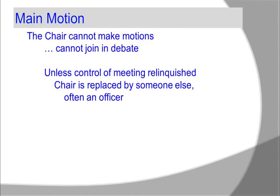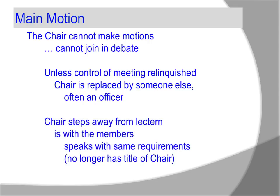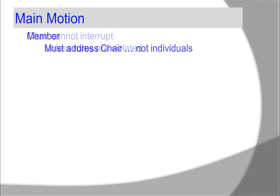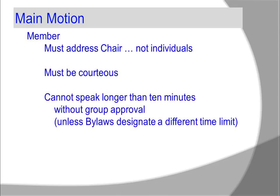The chair cannot make motions and cannot join in debate unless control of the meeting is relinquished to someone else. A chair is often replaced by an officer. The chair steps away from the lectern, is with the members, speaks with the same requirements, and no longer has the title of chair. A chair cannot interrupt unless rules are violated. A member must address the chair, not individuals. The member must be courteous, and the member cannot speak longer than 10 minutes without group approval, unless the bylaws designate a different time limit.